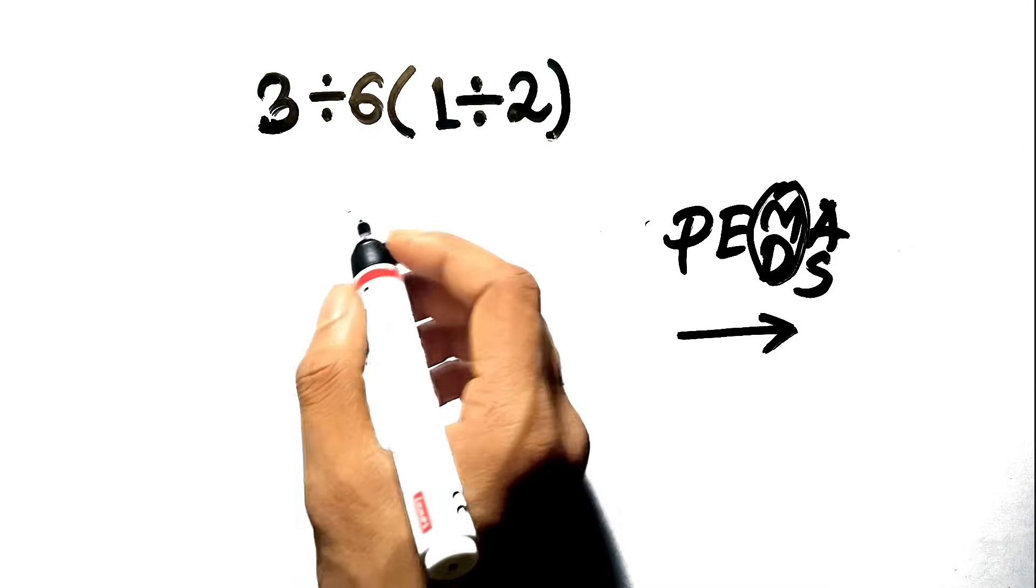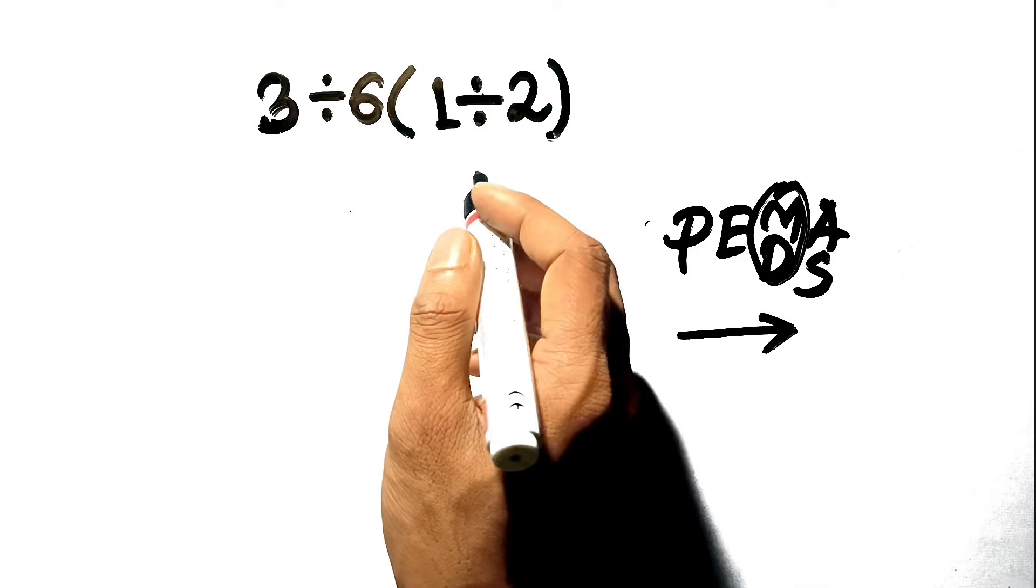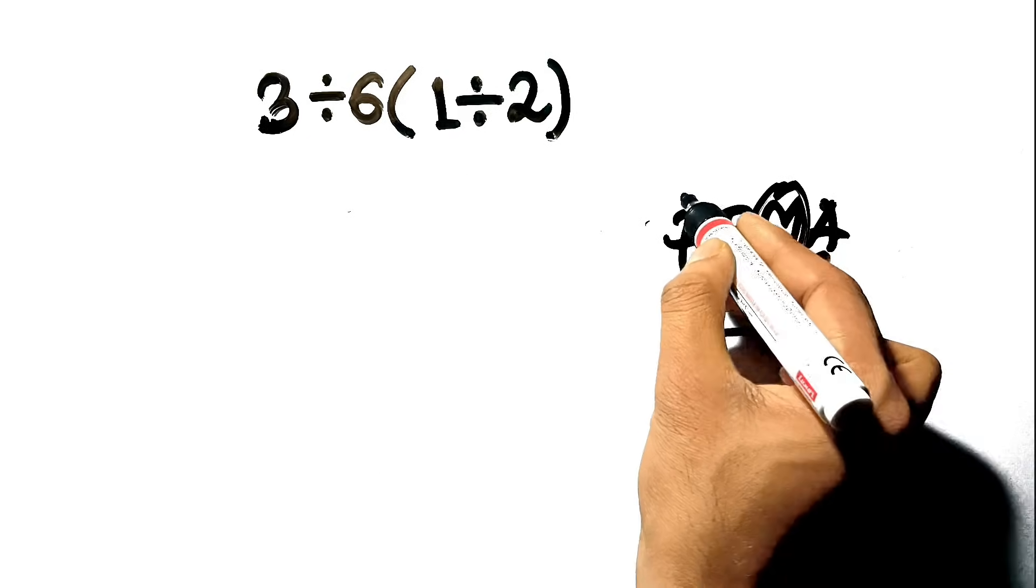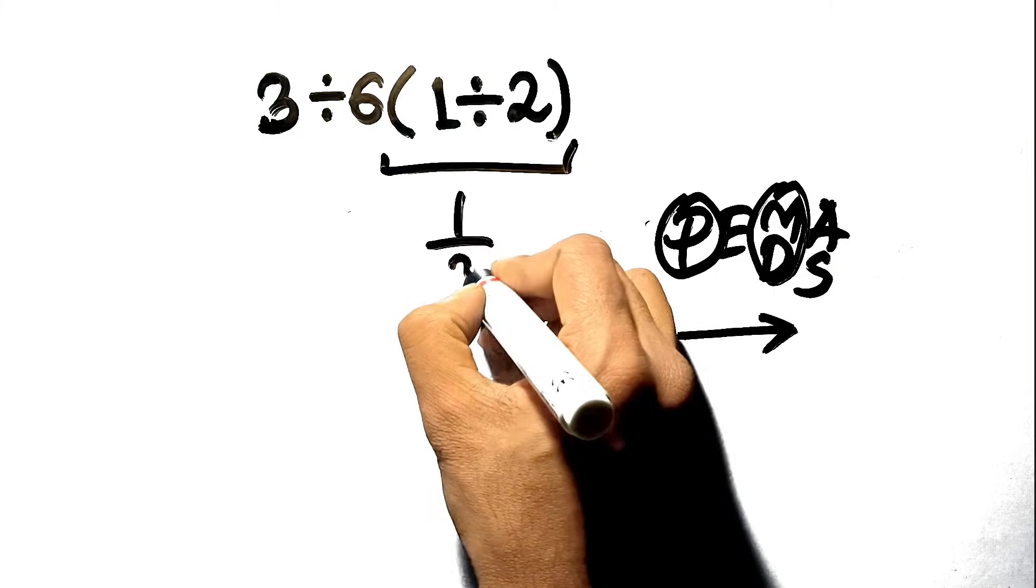So, let's solve 3 divided by 6 times the quantity 1 divided by 2 directly. First step, solve inside the parentheses. 1 divided by 2 is 1 half, or 0.5.